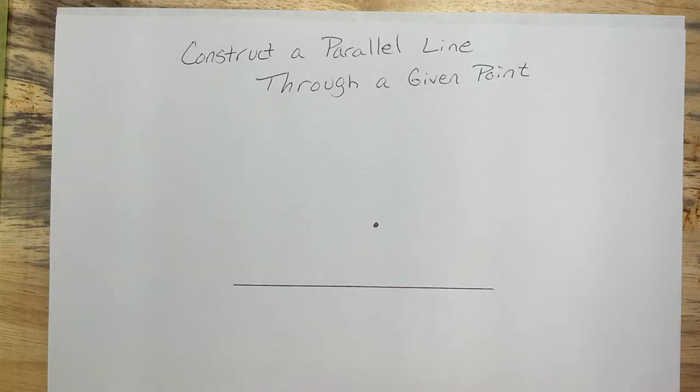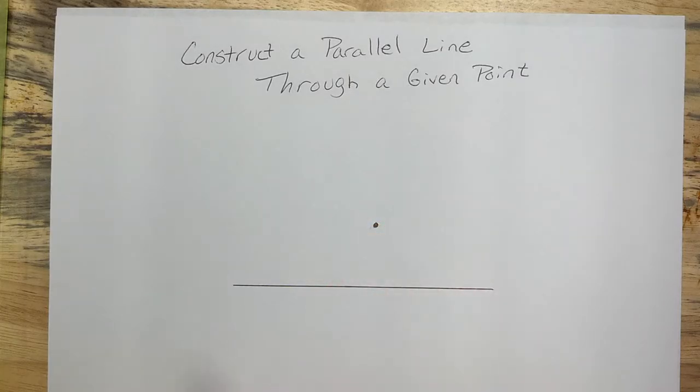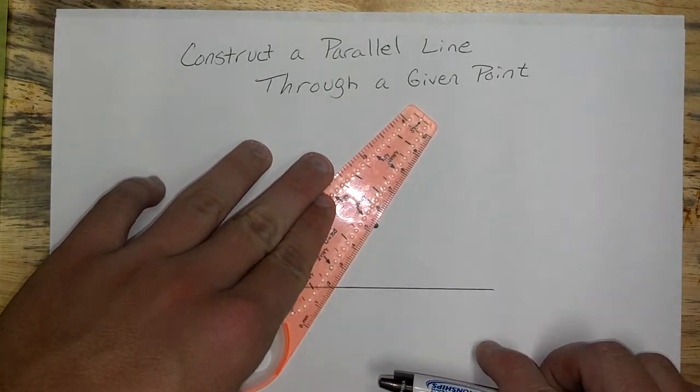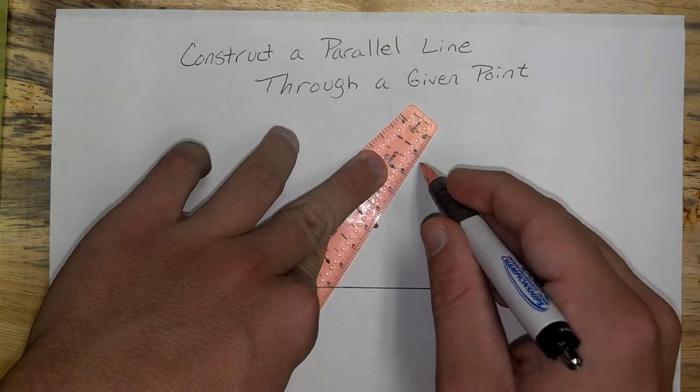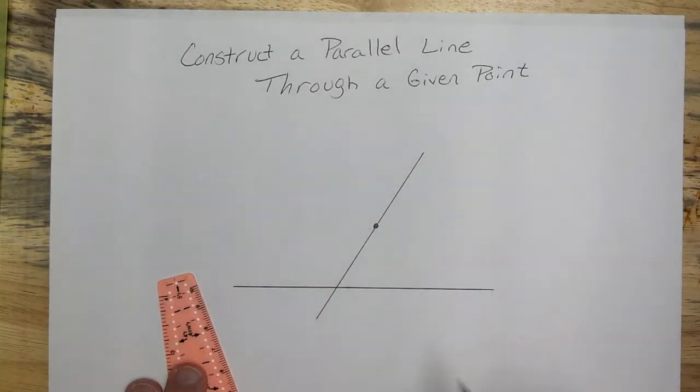So, first step, we need to draw another line that goes through that point and also through this line. It doesn't matter how you do it, as long as you create a line. You can create the line straight up and down, you can slant it as long as they intersect both of them.